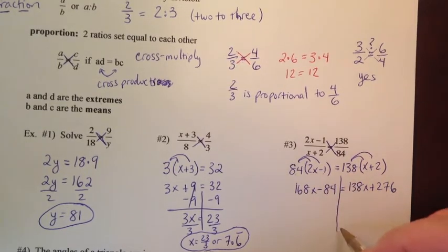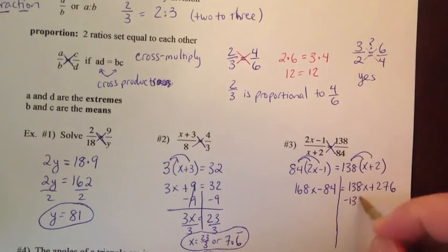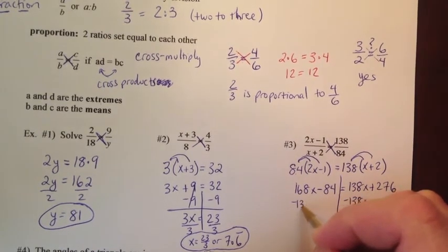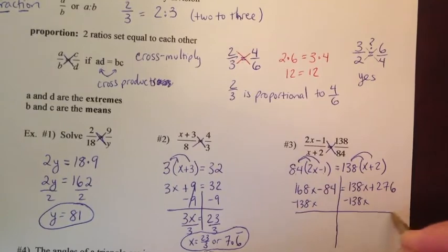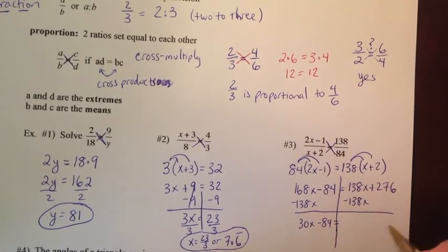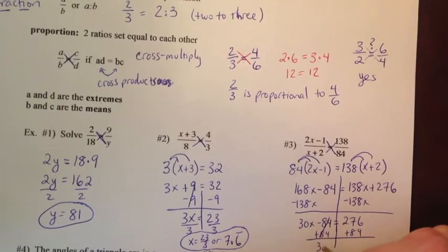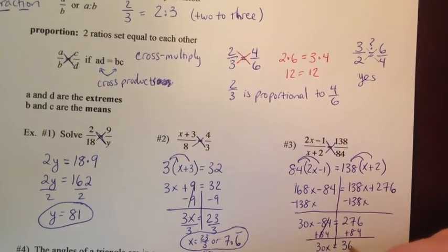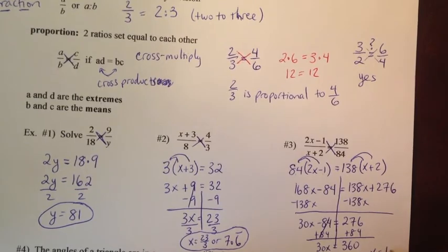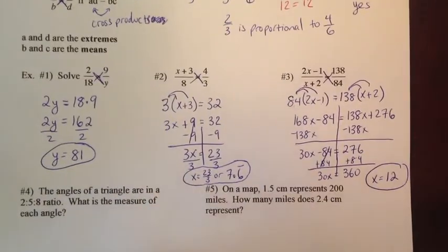Now we'll solve it. Let's move the variables onto the same side. Let's go minus 138X minus 138X. So that gives us 30X minus 84 equals 276 plus 84 plus 84. So that gives us 30X equals 360. And then you divide by 30. X is equal to 12. That works out a little bit nicer.